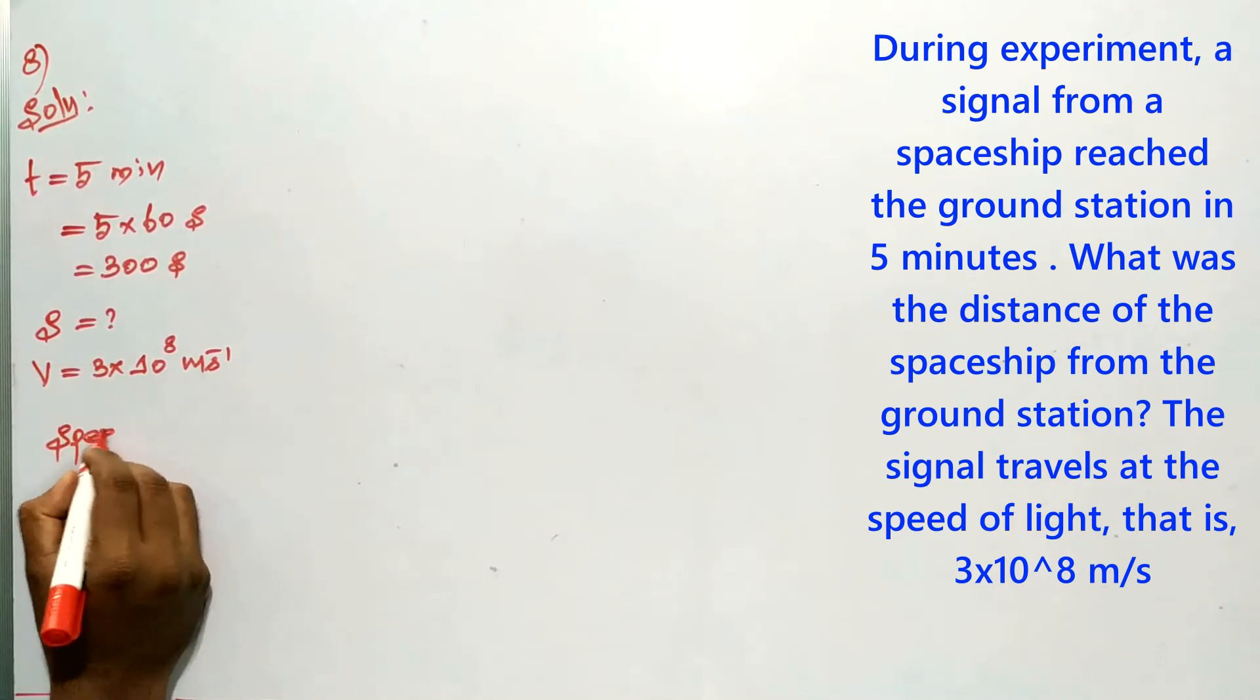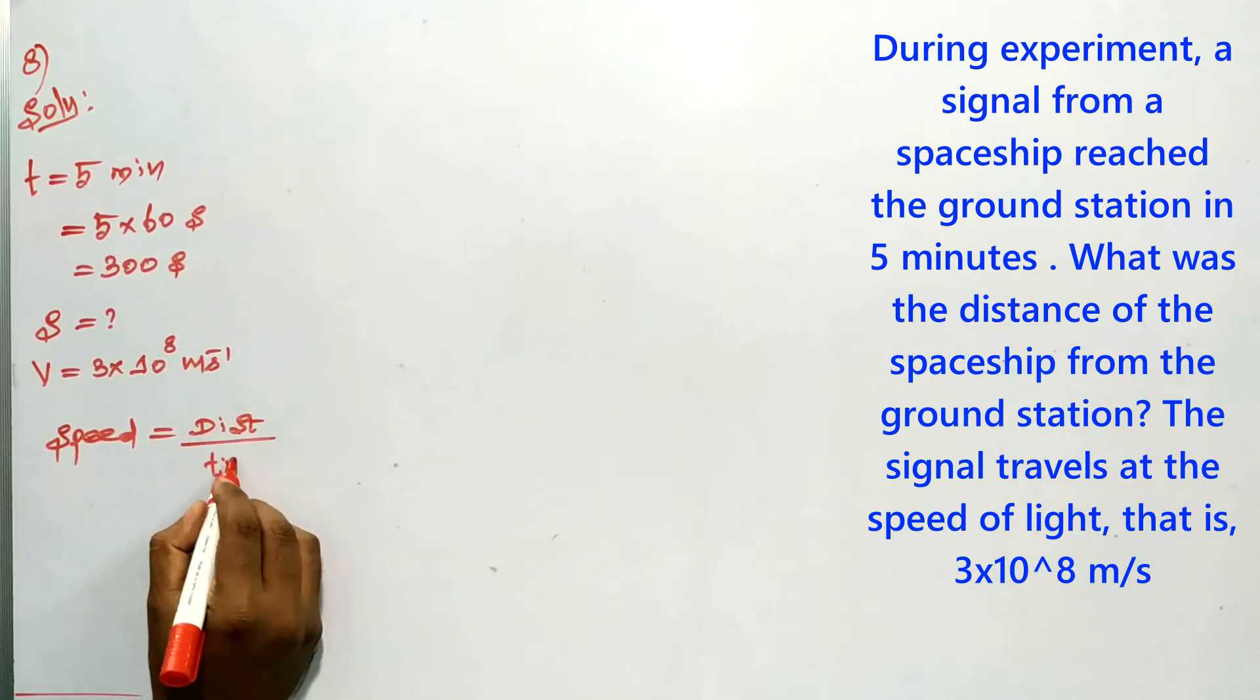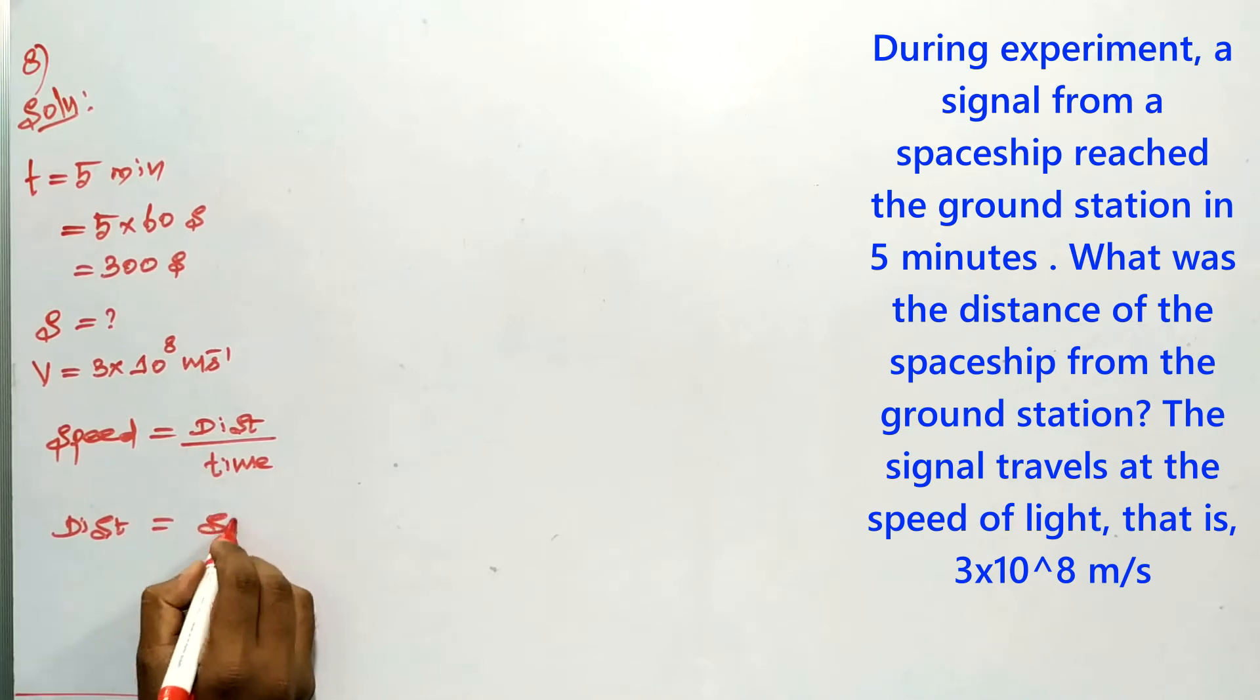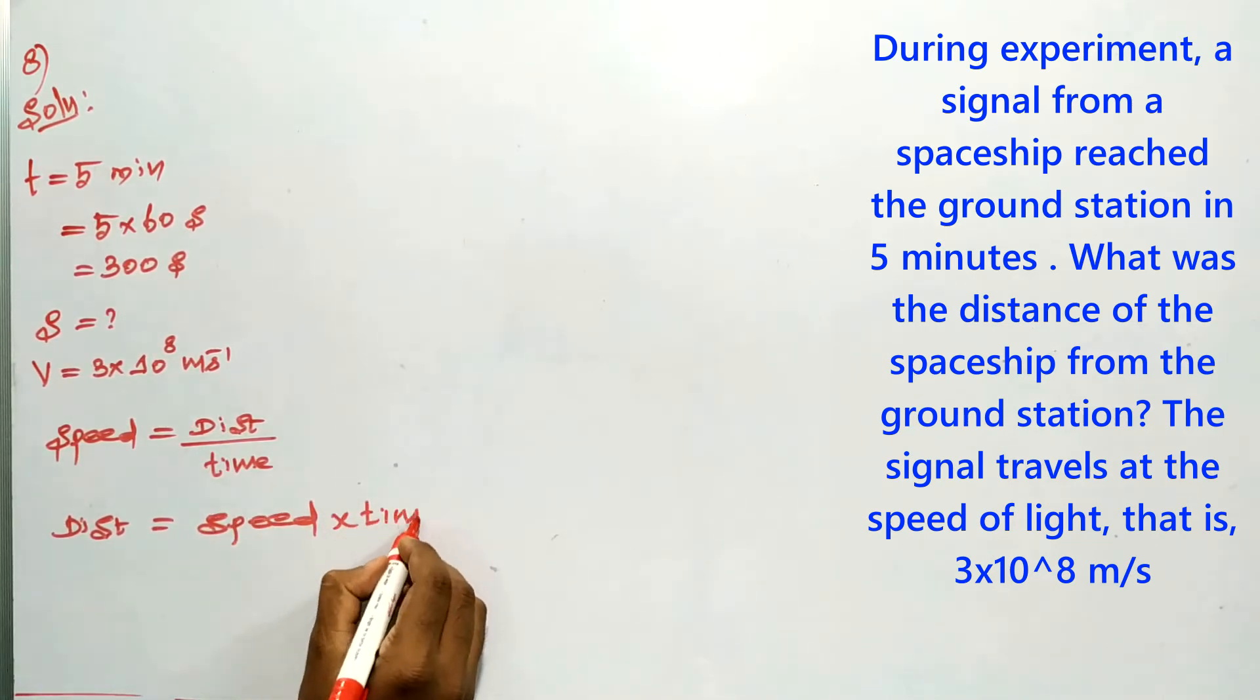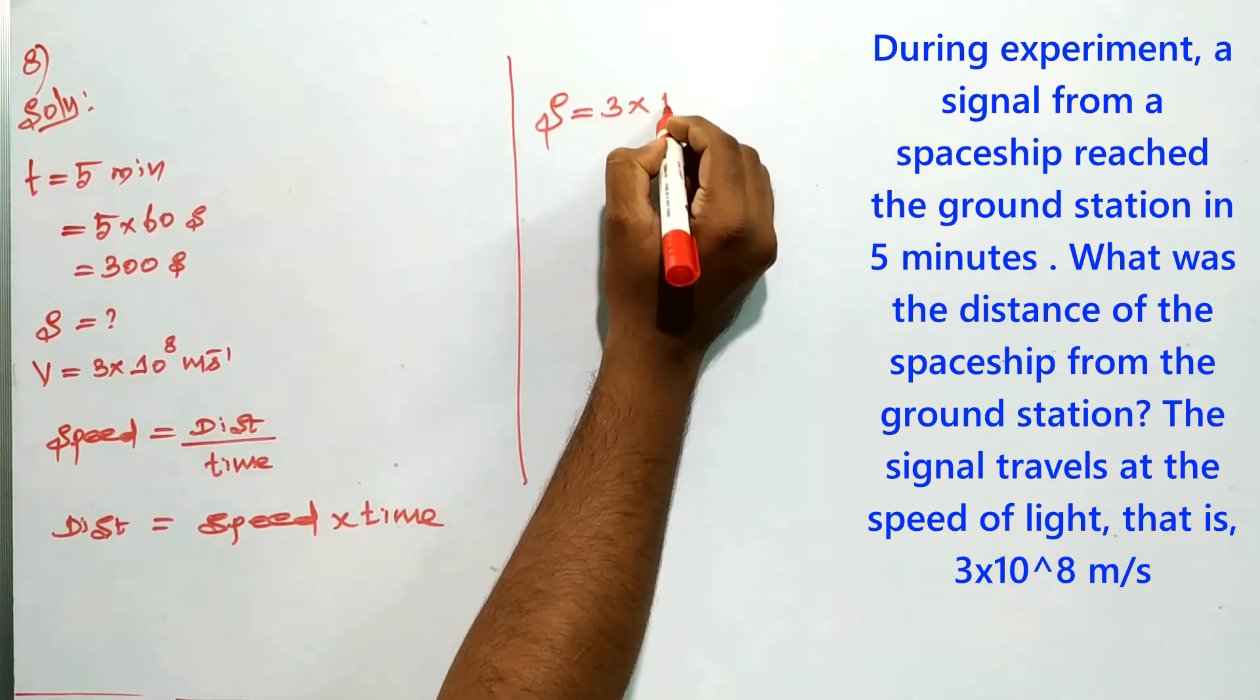We want to find distance. Speed equals distance by time, so distance equals speed into time. Speed is 3×10^8 meters per second and time is 300 seconds.